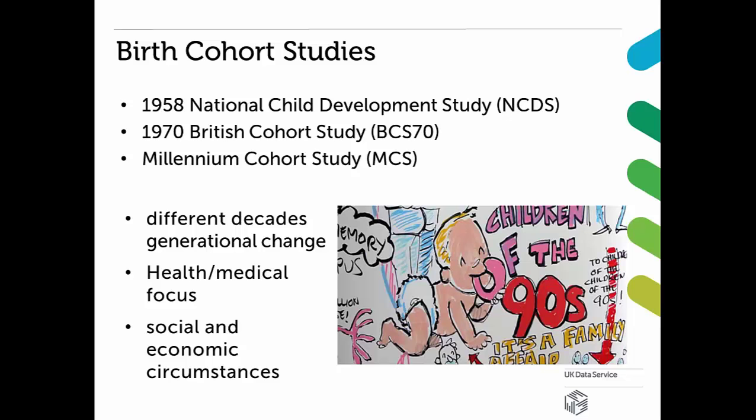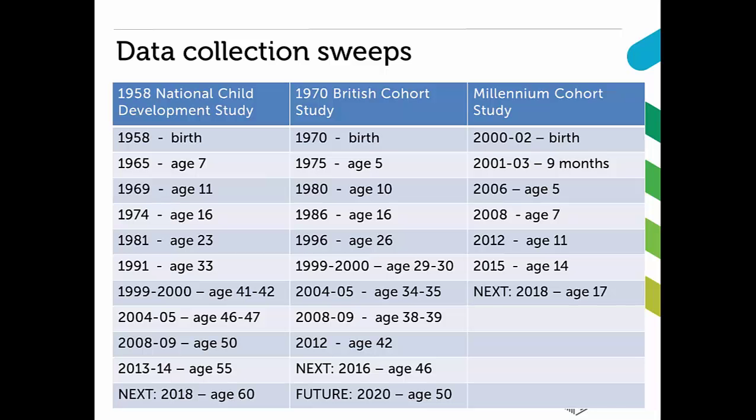Each one follows a sample of babies born in a specific week in that particular year, and individuals are followed across their lifetime. The aim is to understand the factors which influence our development across our entire lifespan. Because these three studies started in different decades, using all three in combination enables us to look at generational change. All three studies have a very strong medical and health focus, collecting an awful lot of information around these topics, but they also collect a wide range of data on social and economic circumstances, building up a very full picture of people's lives.